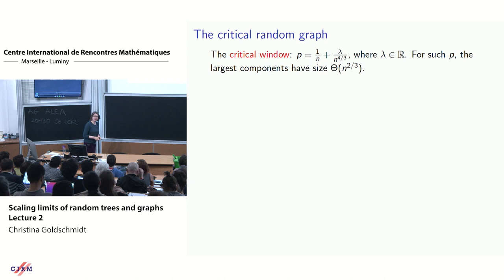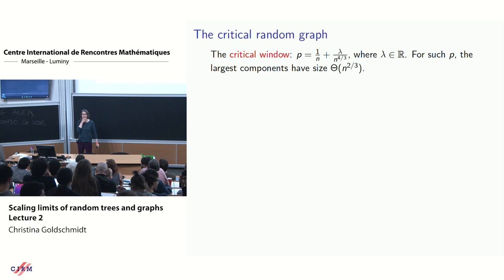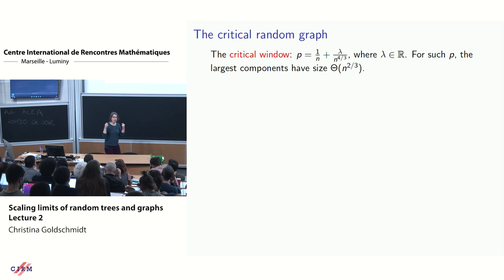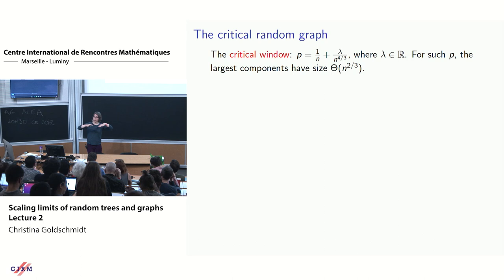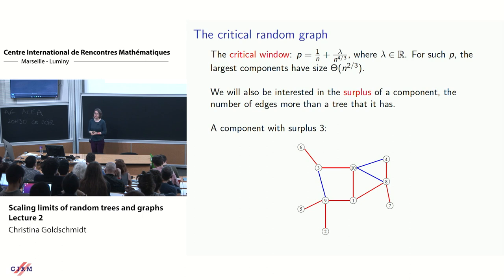Rather than just looking at the critical point p = 1/n, there is a whole critical window where p = 1/n + λ/n^{4/3} for a real parameter λ. For such values of p the largest components have size on the order of n^{2/3}, so this is the regime where critical-type behavior is visible.